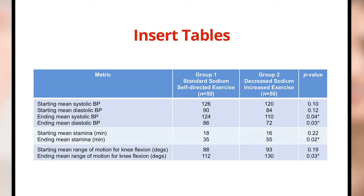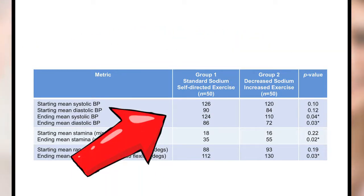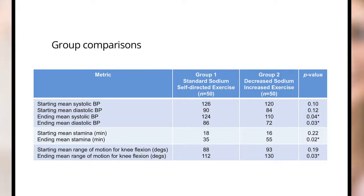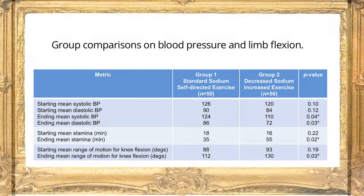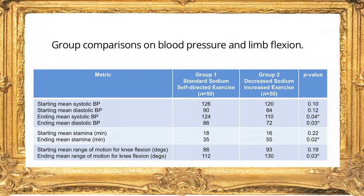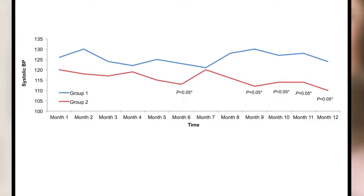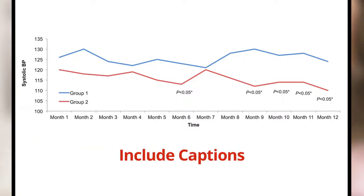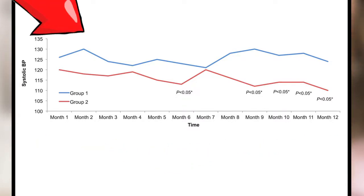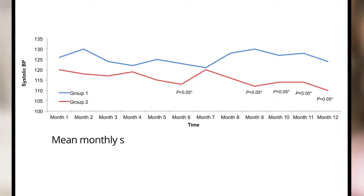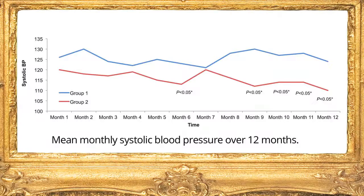Before listing references, you'll insert any tables you've generated. For our clinical example, we'll insert a table with the following caption: group comparisons on blood pressure and limb flexion. A table such as this will concisely capture some of your key findings and will reduce the need for additional text in the results section. Here you'll also insert any graphs you've generated, also including captions. We'll insert this graph with the following caption: mean monthly systolic blood pressure over 12 months. Similar to a table, a graph such as this will highlight your major findings and decrease the amount of text in the results section.